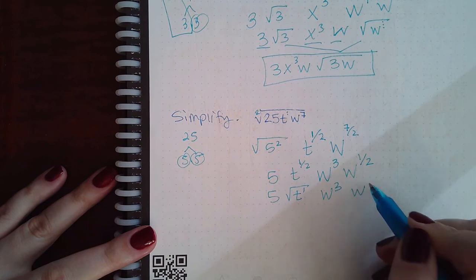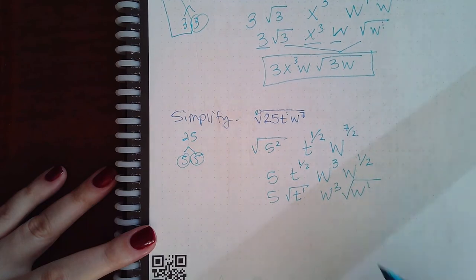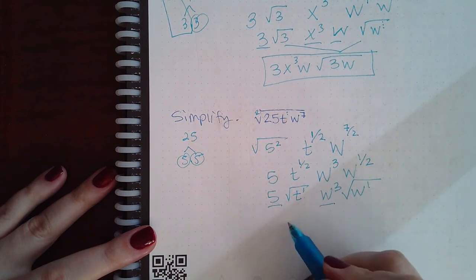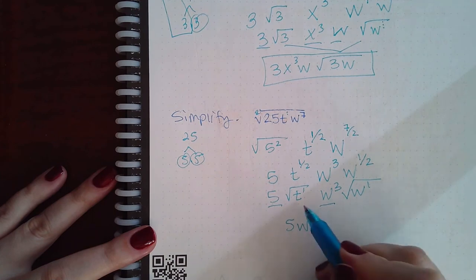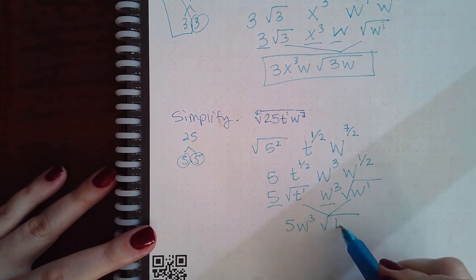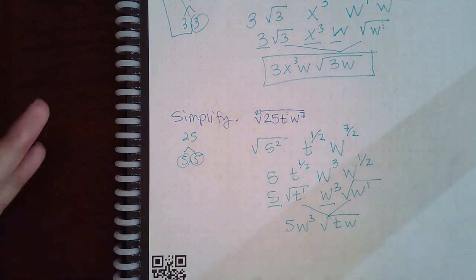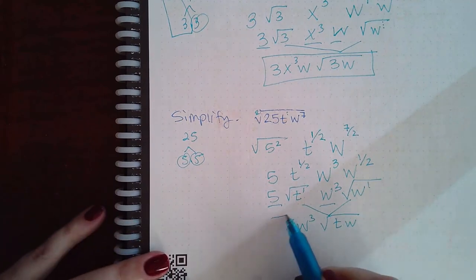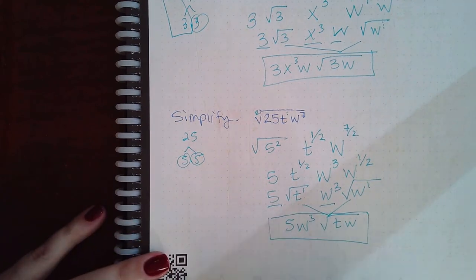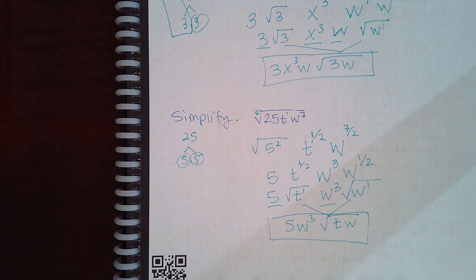and then w to the first power. And then the outside numbers get multiplied together, and then the inside numbers get multiplied together. In this case they're variables, right, but that is the simplified answer. So just keep doing what